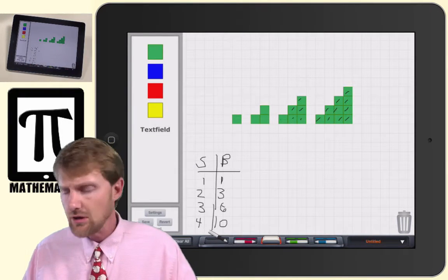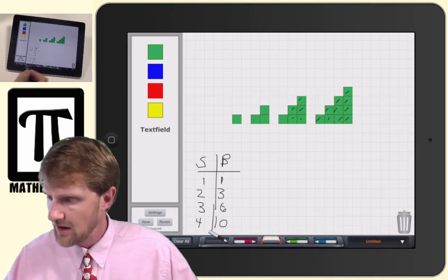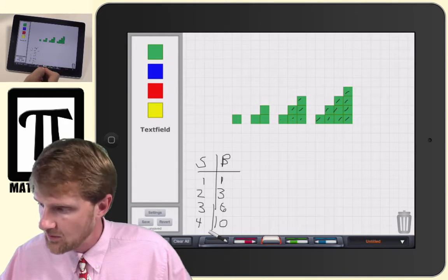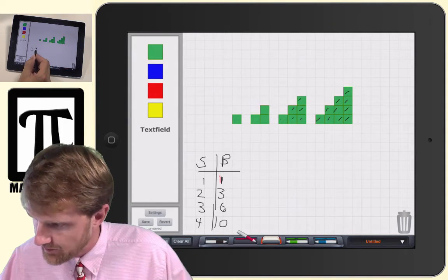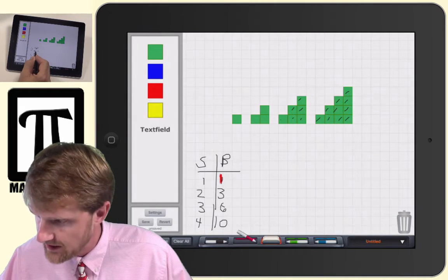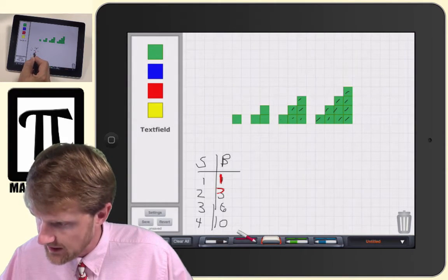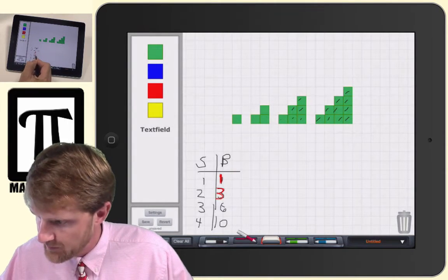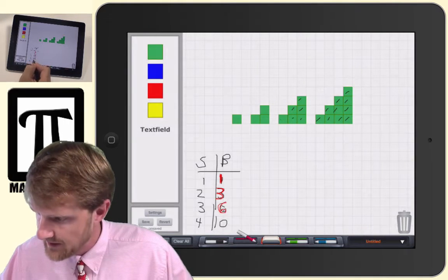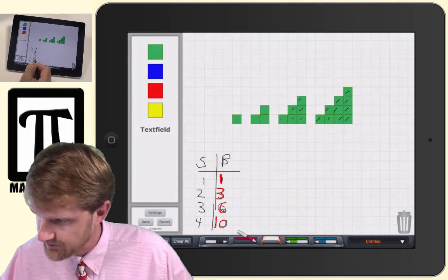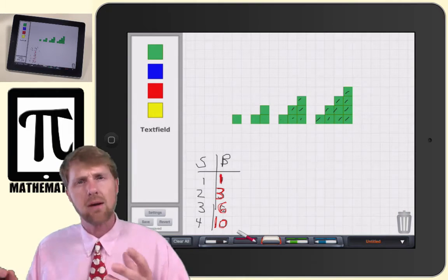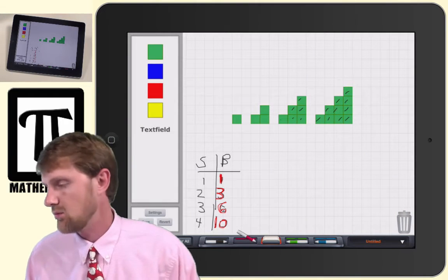And so, you look at our chart, or our table, and we see that the first staircase has one, the second has three, the third has six, and the fourth has ten. And I'm using a BrainingCamp app, color tiles, to help work with this problem.